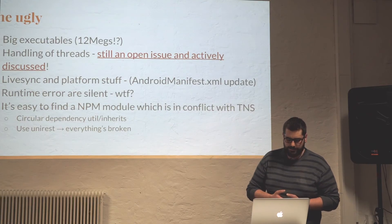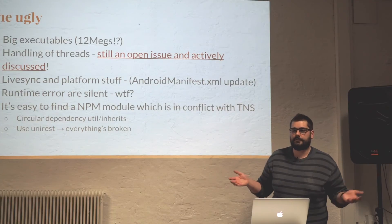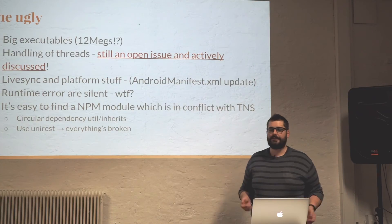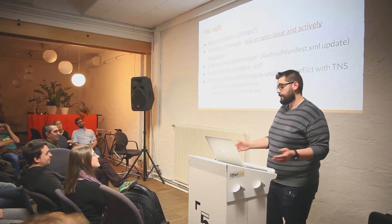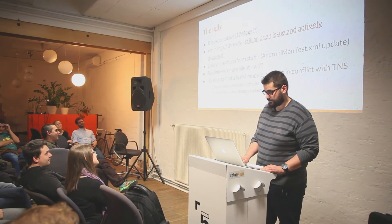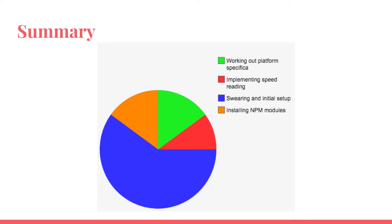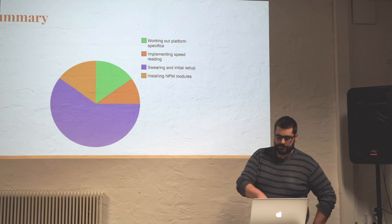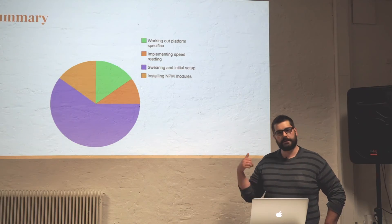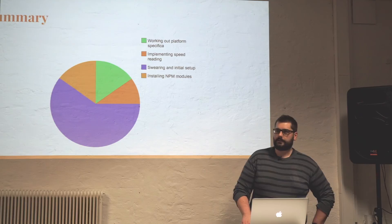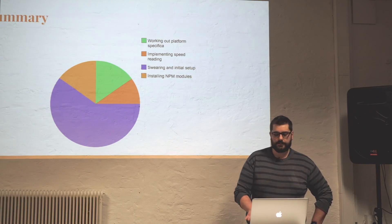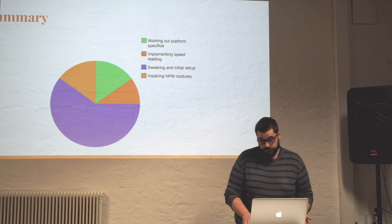The next thing I really hate is that runtime errors are just silent — nothing happens. And it's really easy to find an NPM module which doesn't work. To summarize my work with the framework: more than half of the time I was swearing and trying to get it to work. But after it worked, actually implementing is very, very fast. I did implement speed reading in Android before — it's on my GitHub repo too — and I needed about three or four times the code I needed here in JavaScript. That's really nice. But you need much work to get there.